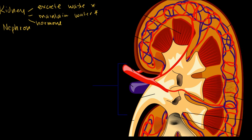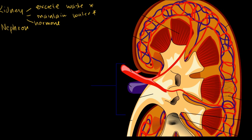Just to understand the different parts here — because it will actually be significant when we start talking about the functional units or the nephron within the kidney — this area right here, from here to here, is called the renal cortex. Whenever we talk about something with the kidney, if you hear 'renal' anything, that's actually referring to the kidney. So this right here is the renal cortex, that outer part right there.